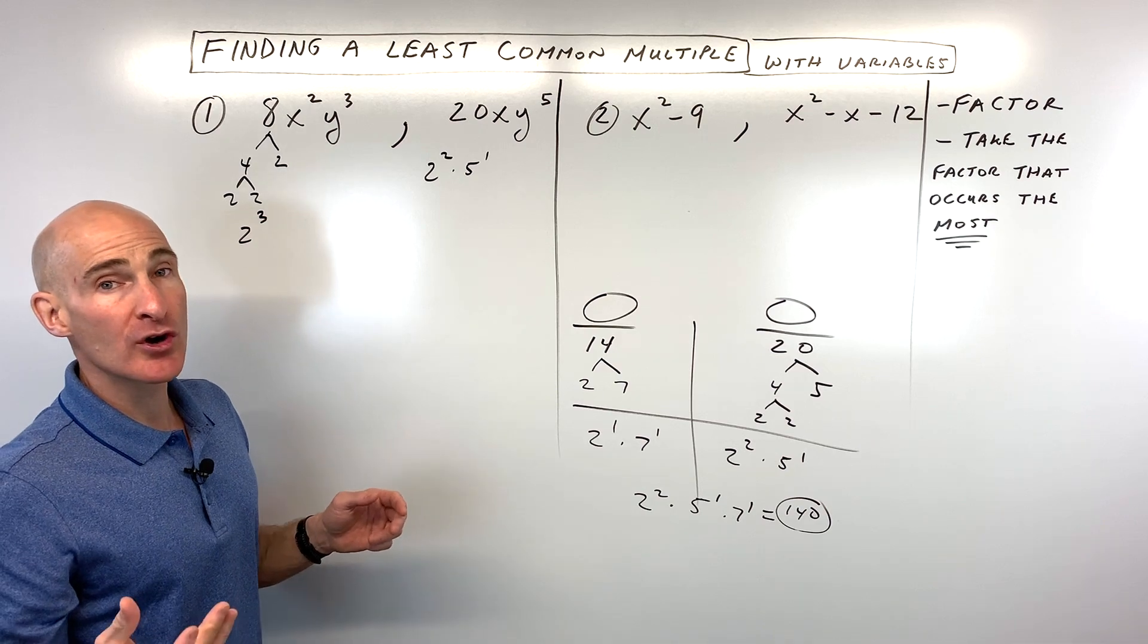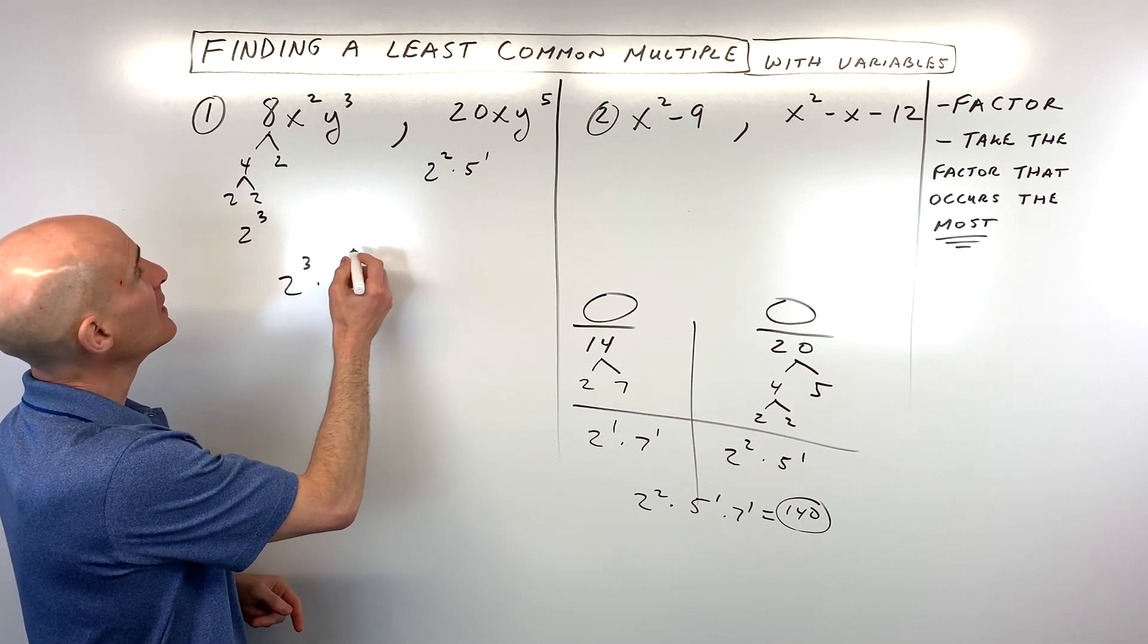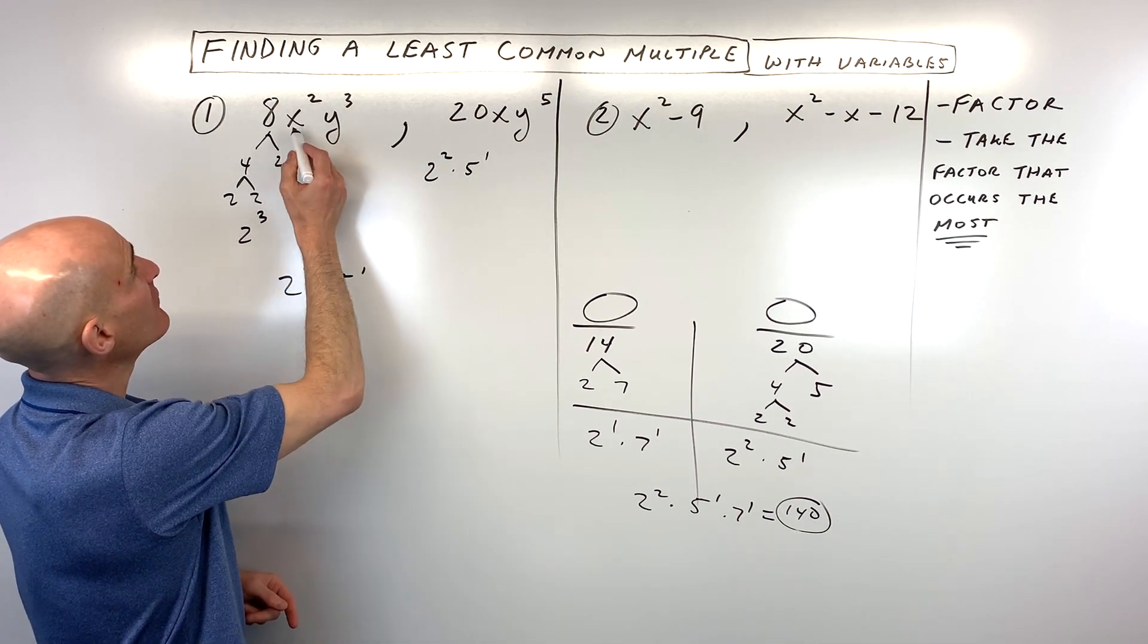So we want to take what occurs the most. We've got 3 twos here, 2 twos here, we're going to need 3 twos. We're going to need 1 five, there's no fives here. And here we've got x squared, that's like 2 x's multiplied together, here we have 1 x, we're going to take the one that occurs more.